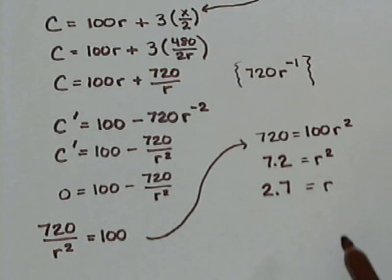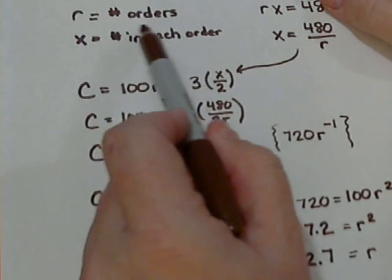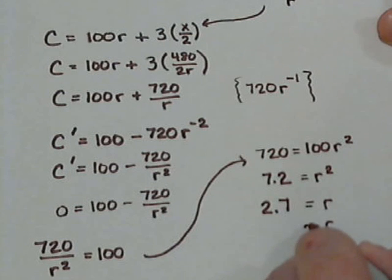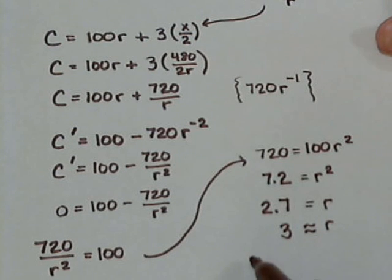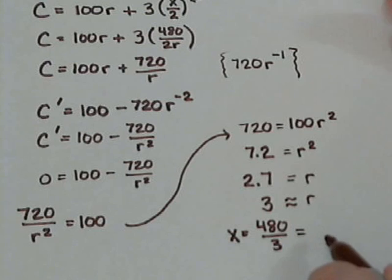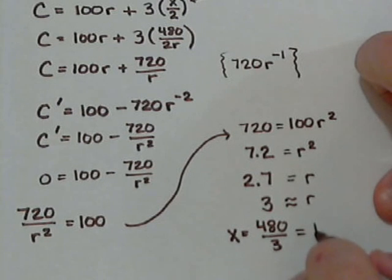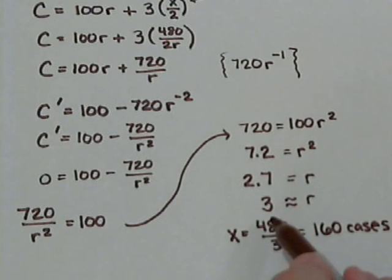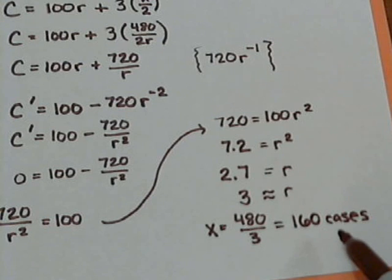So what this tells us then is to minimize our cost, we need to place 2.7 orders every year. Well, it doesn't make sense to place 2.7 of an order. So we probably want to round that off to the nearest number. So we'll make 3 orders throughout the year. And then in each order, 480 over 3 would be 160. Yeah, 160. I thought it was 160, but that just didn't sound right all of a sudden. So, in order to minimize their cost, they're going to place 3 orders every year, and in each order, they're going to request 160 cases.